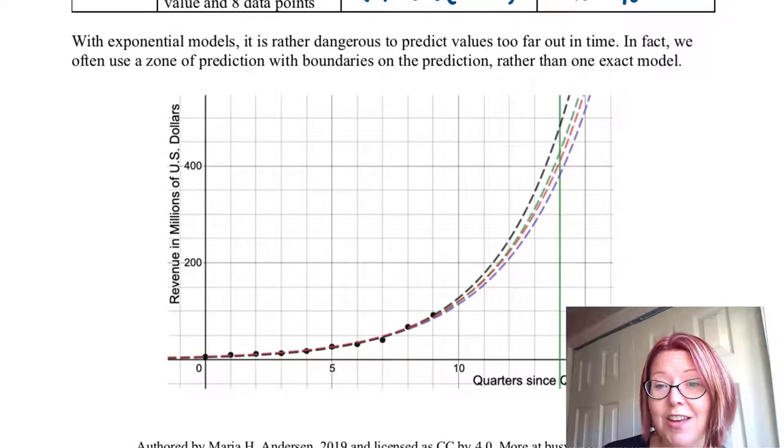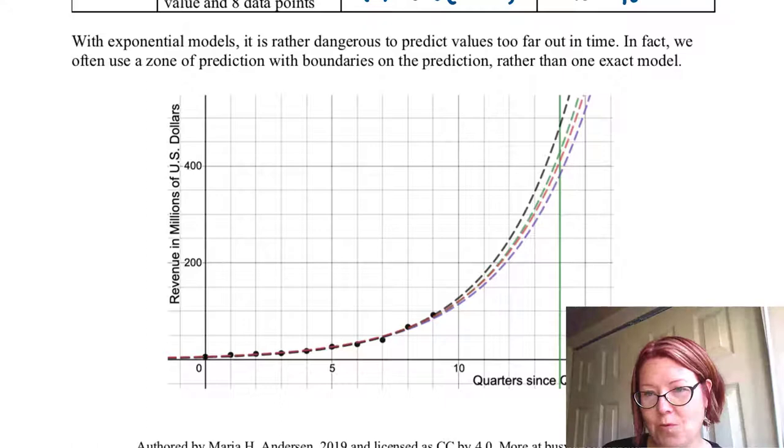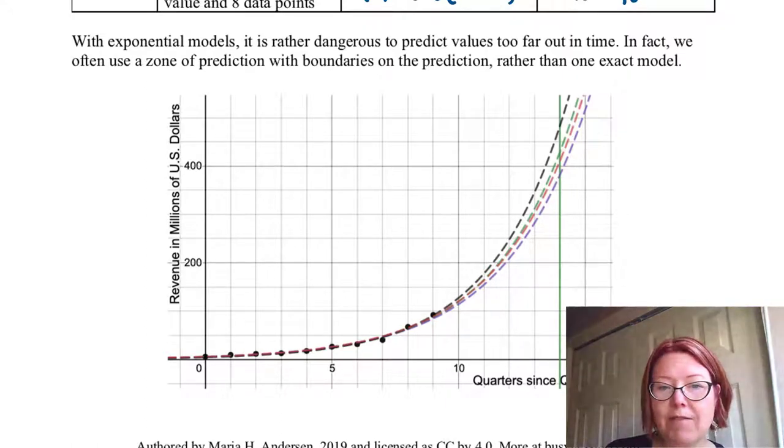In fact if we were to plot all four of these models you can see that the further out we go from the data the more variation we have in these four models. On this graph on the horizontal axis we have the quarters since Q2 2017. And I've put a vertical line at quarter 14 which is the one that we've looked at in all four of these models. On the y-axis we have revenue and millions of US dollars. And for all four models which are graphed in dashed lines the fit does look pretty darn good for the first nine data points. But as we move from the ninth quarter to the 14th quarter the graphs spread further and further apart.